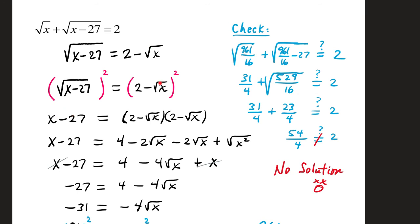That's going to leave an x minus 27 on the left side. 2 minus square root of x, when it's squared, that's two of them, and we have to multiply out. So we have 4 minus 2 square root of x minus 2 square root of x plus square root of x squared.